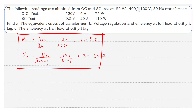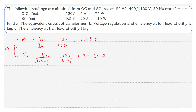Remember, these two values are with respect to the LV circuit only. We can either shift R0 and X0 to the HV side, or shift HV parameters to the LV side. Let us shift R0 and X0 to the HV side.